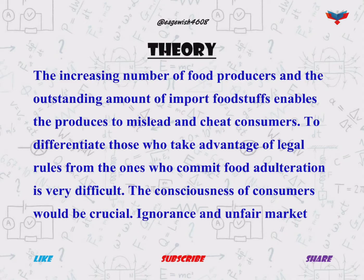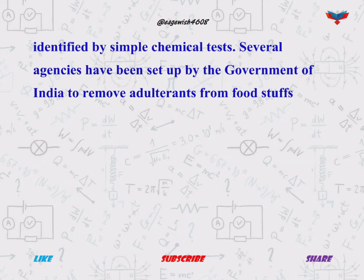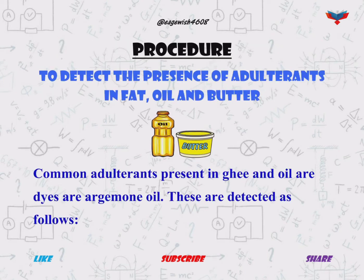In the theory section we will mention the ignorance of consumers towards foodstuff. In the procedure, firstly we will write the steps to detect the presence of adulterants in fat, oil, and butter.